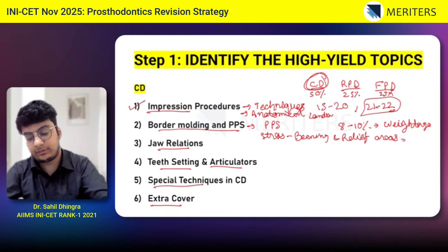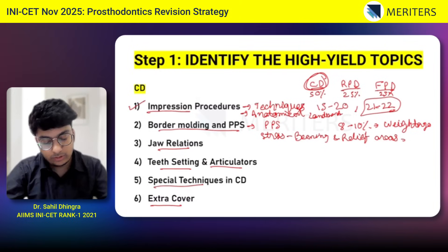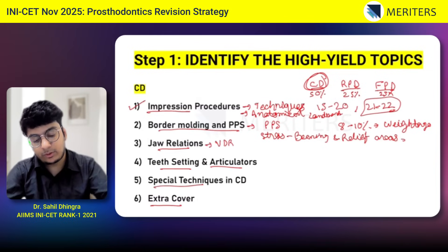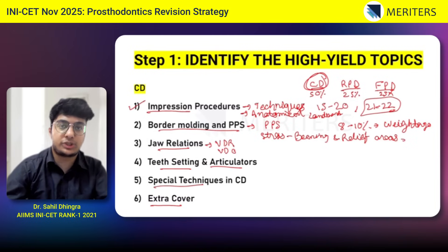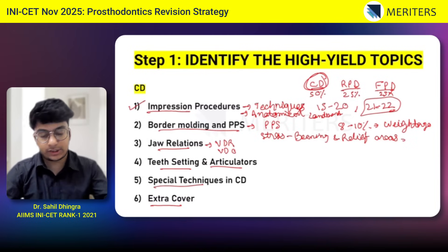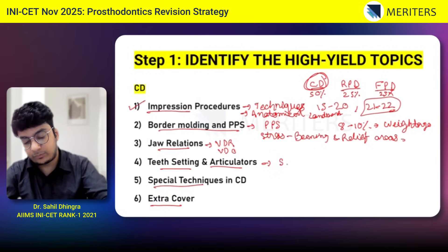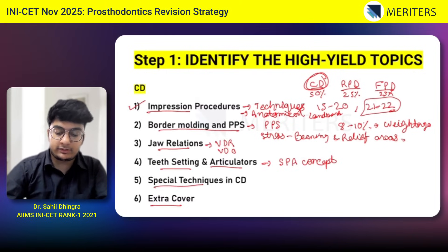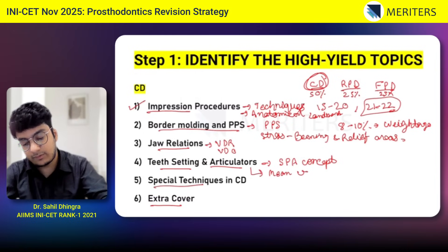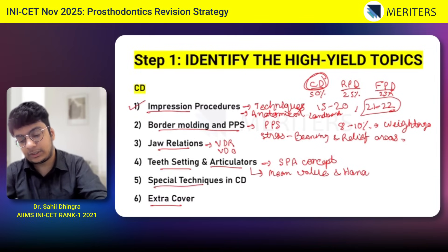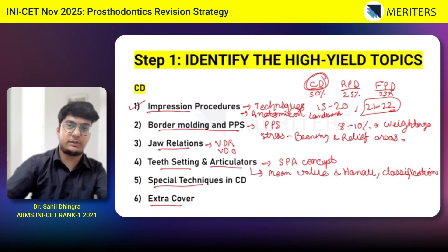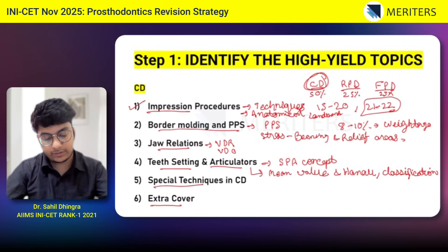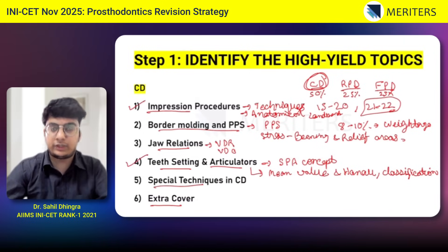In prosto, there are very specific topics in every chapter which you have to do. In jaw relations, you will read mainly about VDR and VDO — the vertical dimension at rest and at occlusion — and how to calculate and what are the methods of recording jaw relation. In teeth setting, mainly focus on your SPA concept, the dentogenic concept based on sex, personality, and age — how you will identify teeth selection in each case based on gender and age. In articulators, read mainly about the mean value articulator and the HANAU articulator in detail, and know the classification for articulators: non-adjustable, semi-adjustable, or fully adjustable.